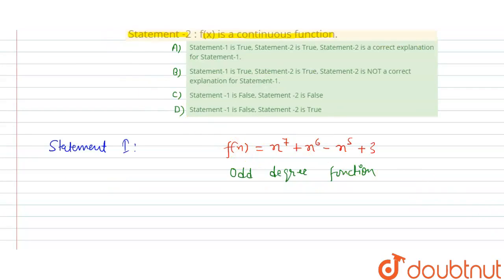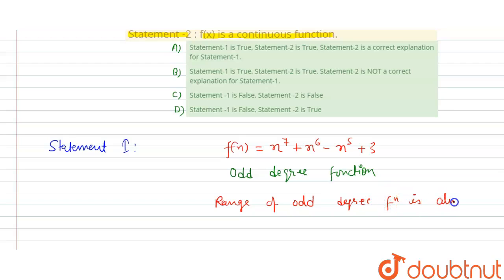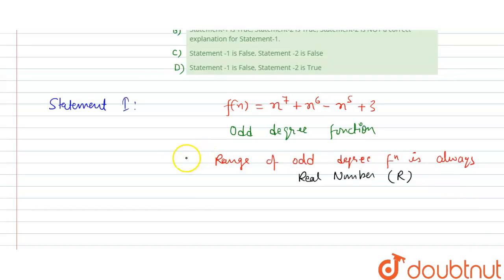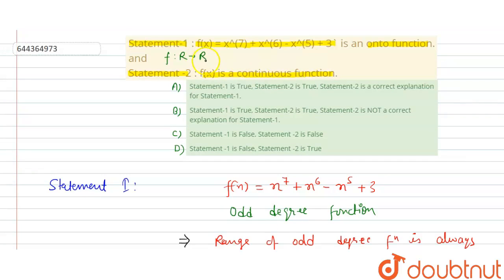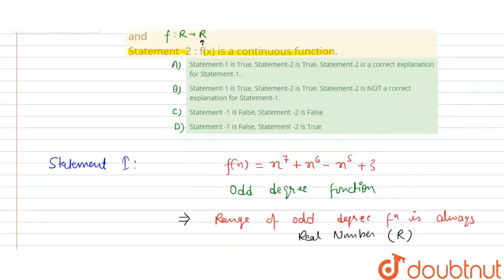We know that the range of an odd degree function is always the set of real numbers ℝ. So the range of this odd degree function is always real numbers, which equals ℝ.